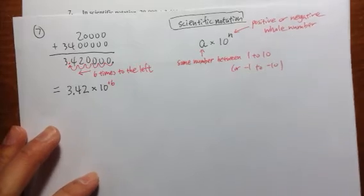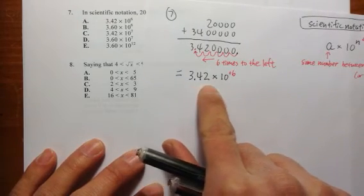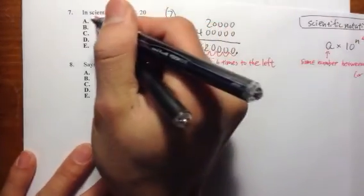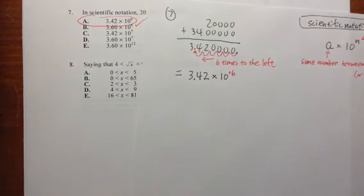So the moment of truth, let's see. 3.42 times 10 to the sixth. That's choice A. And we got it.